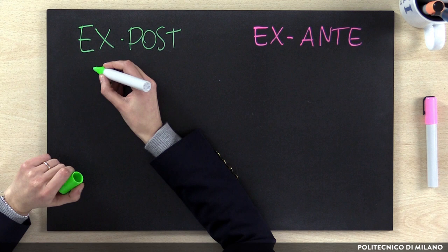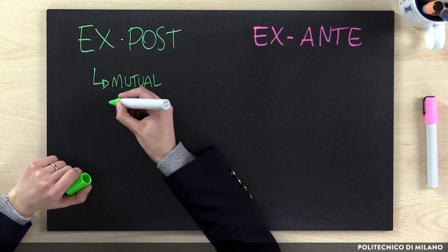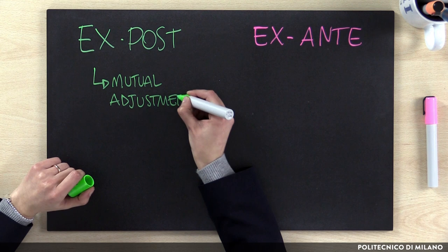Let's start with the ex post mechanisms. The first and least structured ex post mechanism is mutual adjustment. Mutual adjustment is the simplest and most immediate type of coordination mechanism, and it relies on a direct and informal agreement between individuals in order to solve a problem. There are many mutual adjustment situations — think about regular meetings, conference calls, emails, and several others.